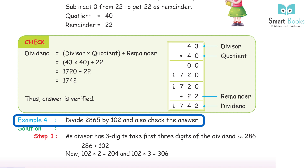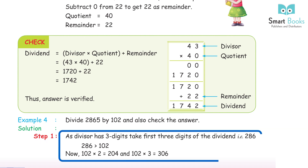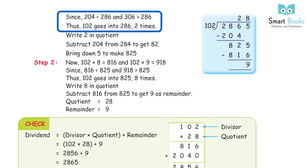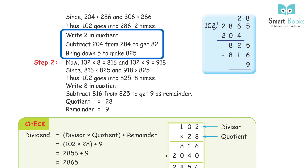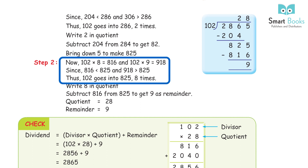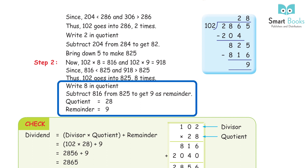Example 4: divide 2865 by 102 and check the answer. Step 1: the divisor has three digits, take first three digits of dividend — 286. 102×2 = 204, 102×3 = 306; since 204 < 286 < 306, 102 goes into 286 two times. Write 2, subtract 204 from 286 to get 82, bring down 5 to make 825. Step 2: 102×8 = 816, 102×9 = 918; since 816 < 825 < 918, 102 goes into 825 eight times. Write 8, subtract 816 from 825 to get remainder 9. Quotient 28, remainder 9. Answer verified.